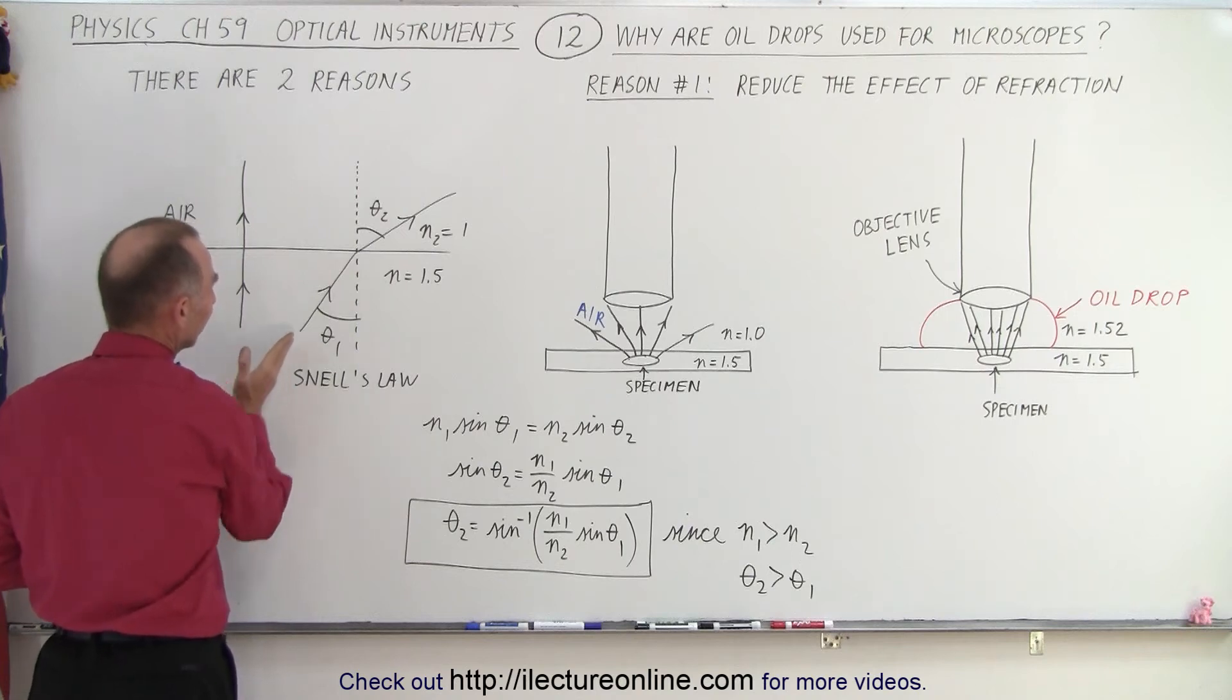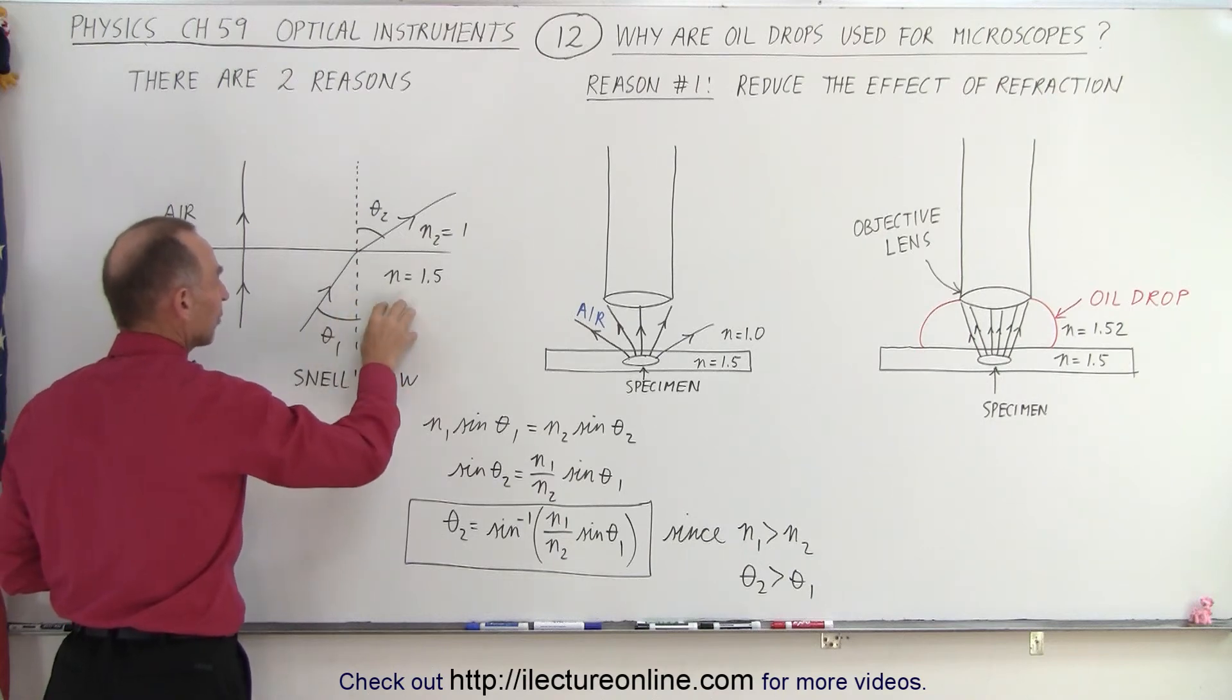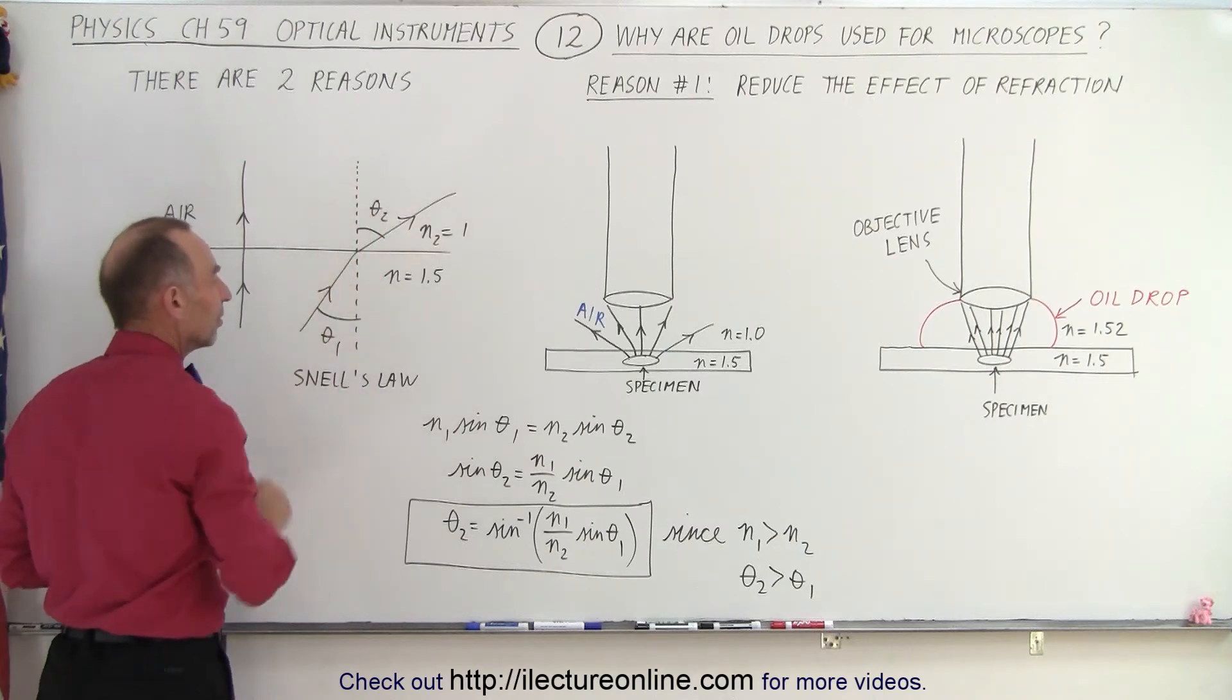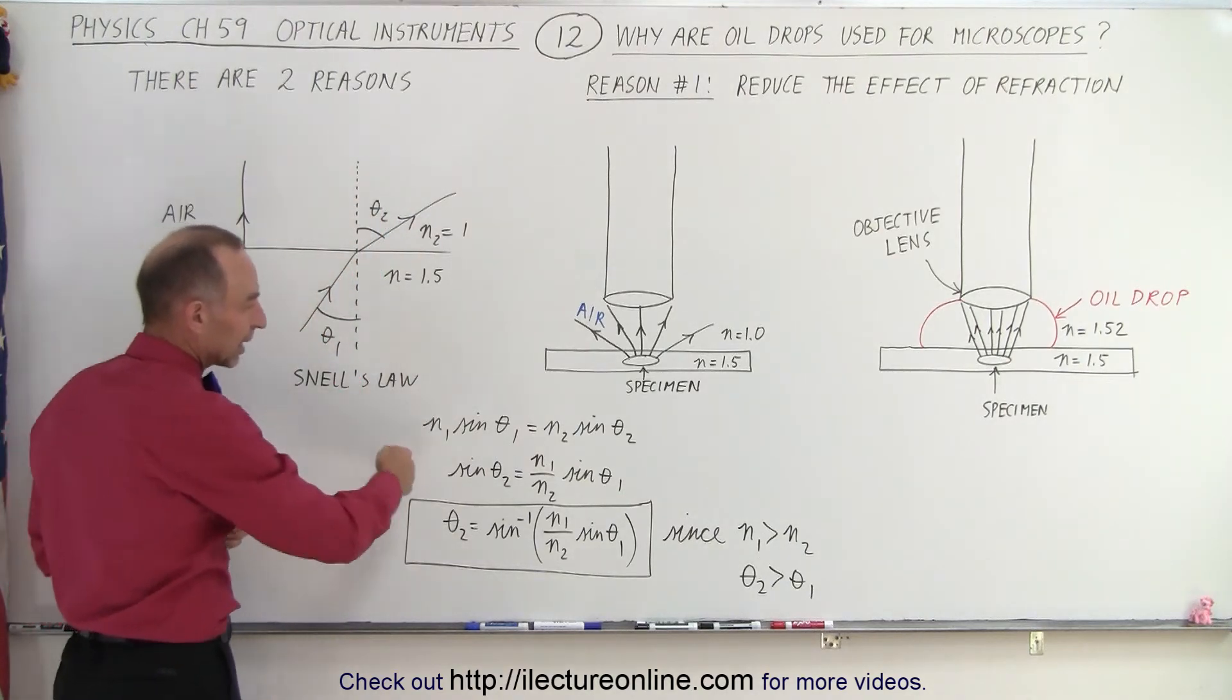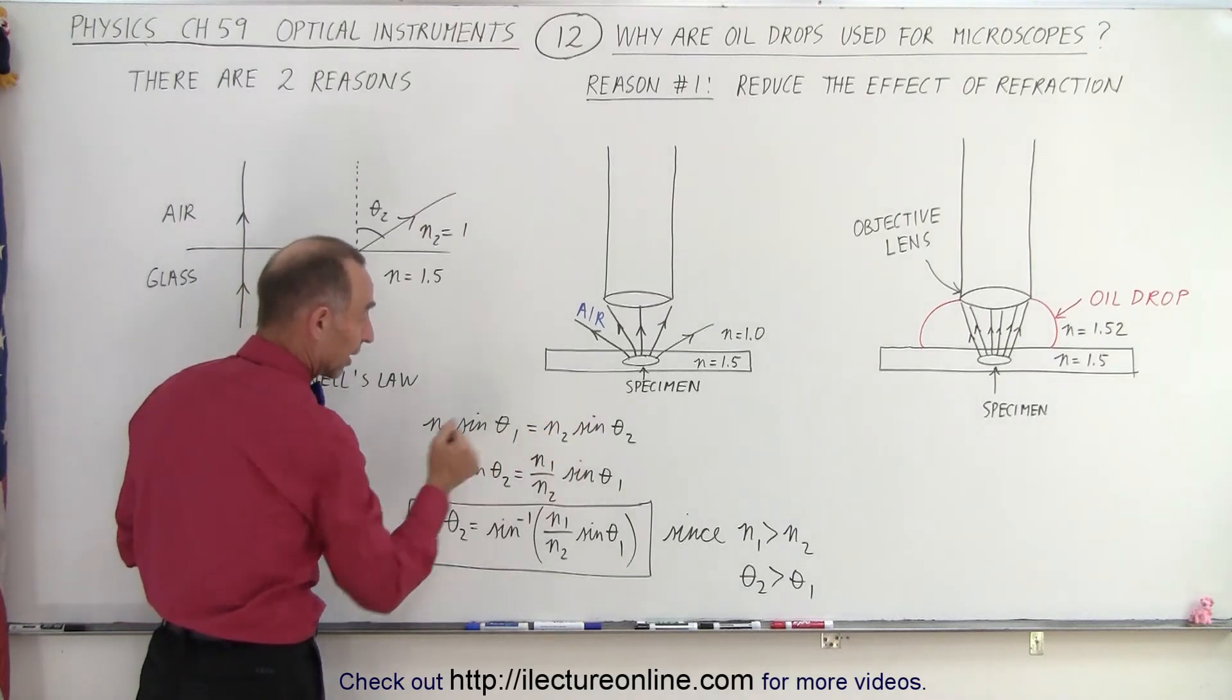But Snell's law tells us that if there is an angle, there's the angle of incidence, there's the angle of refraction. Notice when you go from a high index of refraction to a low index of refraction, the angle of refraction is greater than the incident angle. We can then see that here using Snell's law where n1 sine theta1 equals n2 sine theta2.